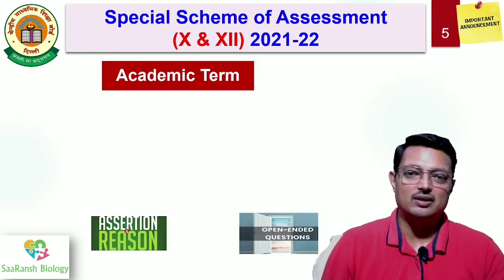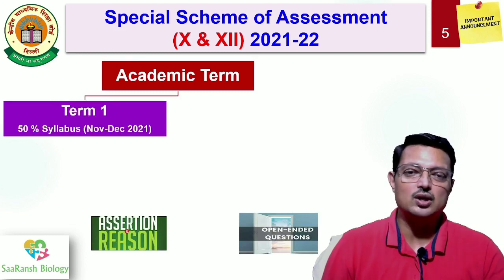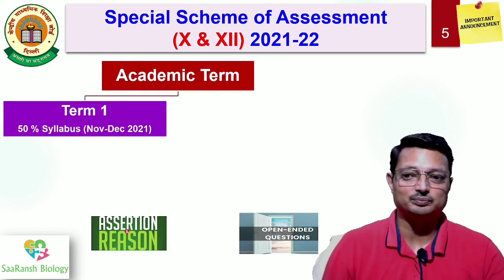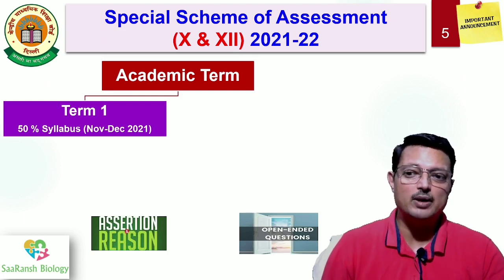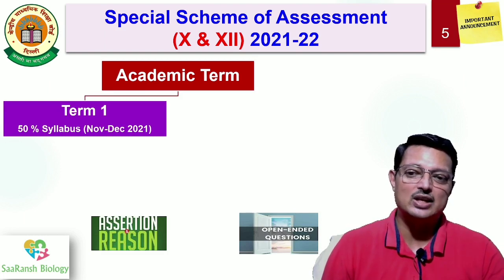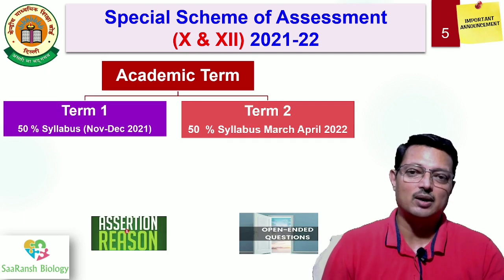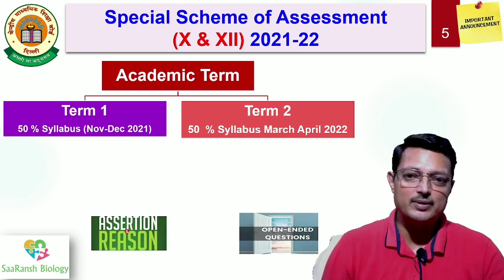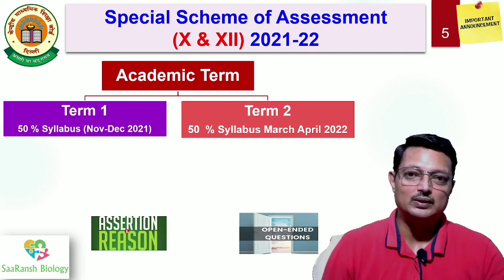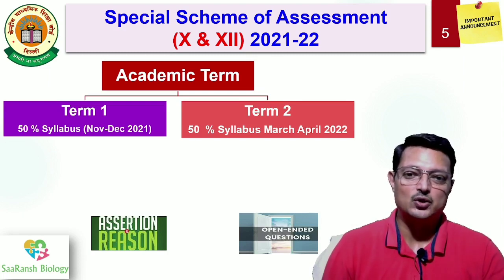The whole academic term will be divided into two terms — term 1 and term 2. Both will have a rationalized syllabus of 50%. Term 1 assessment will take place in November or December 2021. For term 2, the syllabus will cover the remaining 50%, and whatever was asked in term 1 will not be asked in term 2. The assessment will take place in March-April 2022.